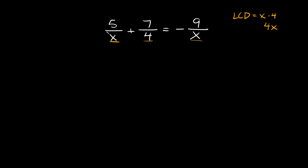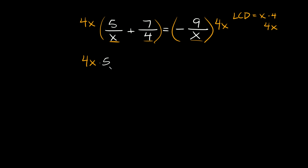So all we have to do is multiply our entire equation by the LCD, which is 4x. We're going to multiply this whole side by 4x and this whole side by 4x. So 4x times 5 over x — the x on top and the bottom cancel out — so we're left with 4 times 5, which is 20. Next we have 4x times 7 over 4.